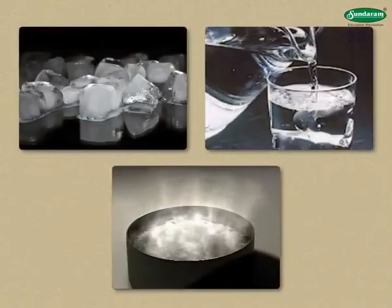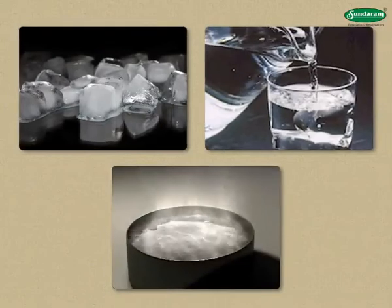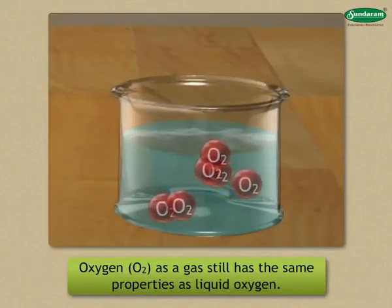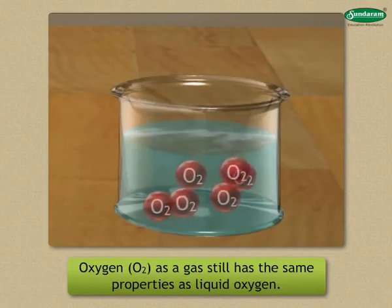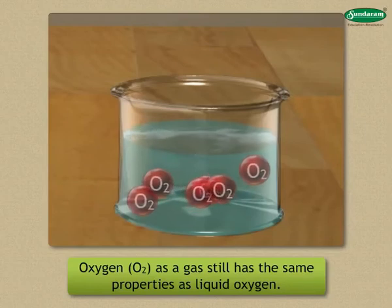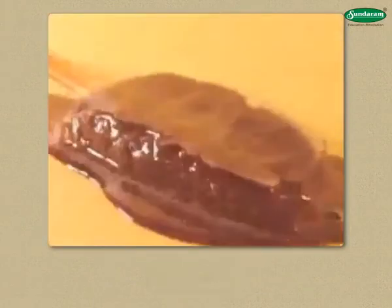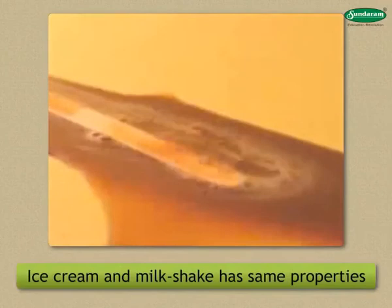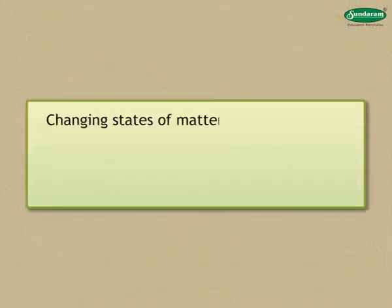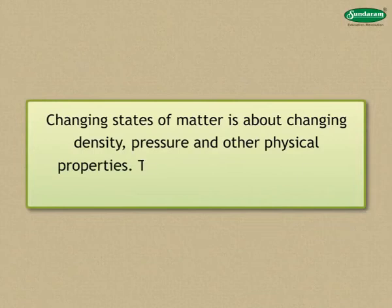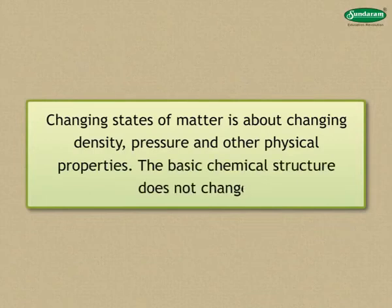Substances can exist in all three phases, like water. For example, oxygen as a gas still has the same properties as liquid oxygen — the liquid state is colder and denser, but the molecules are still the same. If you don't eat ice cream in time, it gets converted into milkshake, with the same properties. Changing states of matter is about changing density, pressure, and other physical properties — the basic chemical structure does not change.